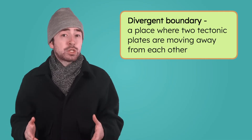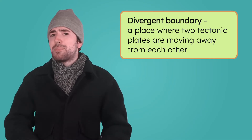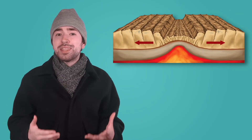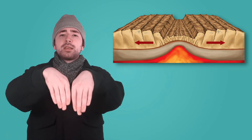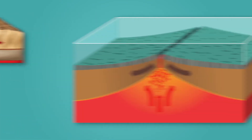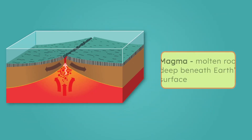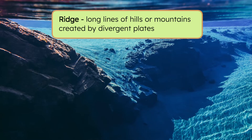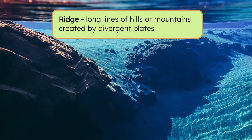Most of the divergent boundaries on Earth are found deep beneath the ocean. Knowing what we know about what lies beneath the crust, what do you think might happen when plates pull apart? When plates move away from each other, the hot molten rock from the mantle comes bubbling up to the surface. We call this molten rock magma. When it reaches the surface, it cools and hardens, forming new rock that becomes a part of the crust. As more and more rock piles up, long lines of hills or mountains are created, called ridges.